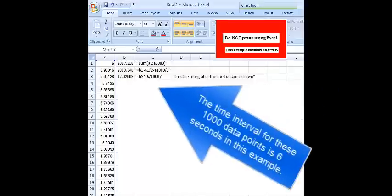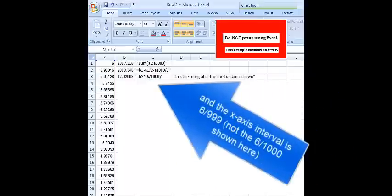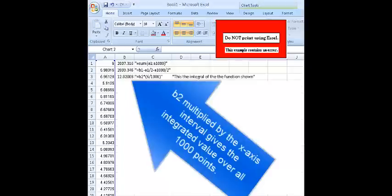The time interval for these 1,000 data points is 6 seconds in this example. And the X-axis interval is 6 over 999, not 6 over 1,000 as shown here. B2 multiplied by the X-axis interval gives the integrated value over all 1,000 points.